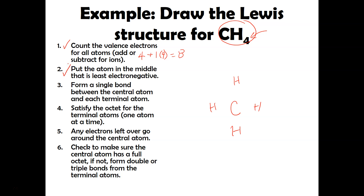Step three is to form a single bond between the central atom and each terminal atom. So I'm going to put one bond here, here, here, and here. Remember, a single line represents two electrons, so I've got a total of eight electrons in my diagram. Step four says satisfy the octets of the terminal atoms — the terminal atoms are all hydrogen and they're already satisfied with two, so step four is done for us already.